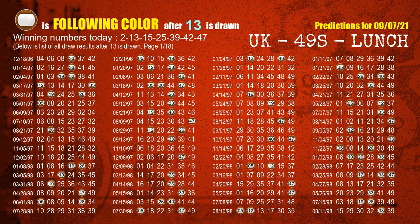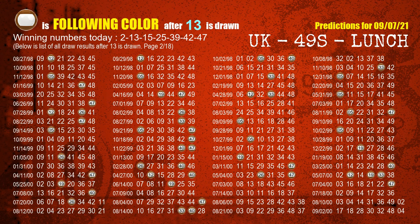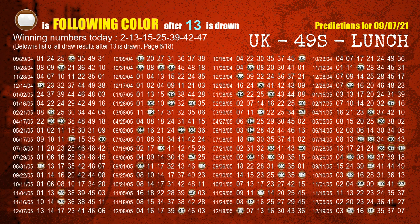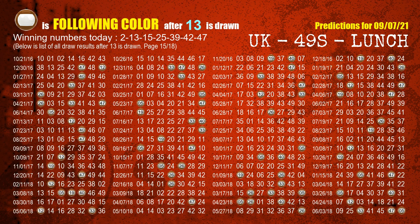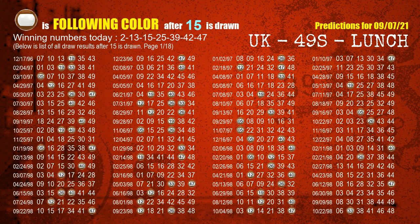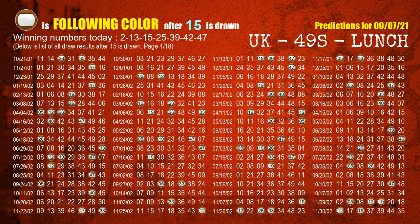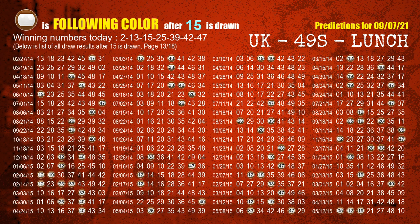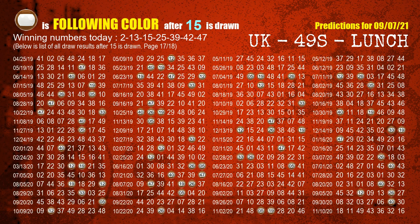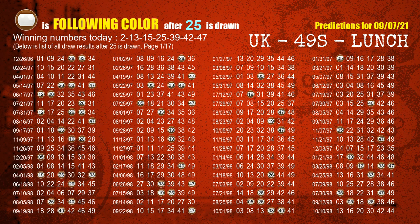The second winning number is 13. The most frequently following color is brown when 13 is the winning number in the last draw. The third winning number is 15. The most frequently following color is brown when 15 is the winning number in the last draw. The fourth winning number is 25. The most frequently following color is brown when 25 is the winning number in the last draw.